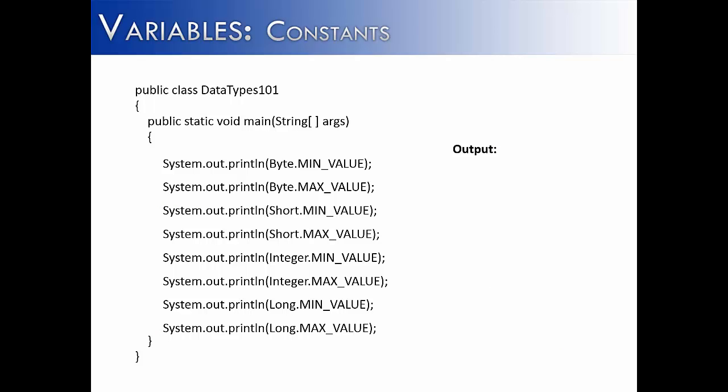Now we're going to show you an actual example of coding with a constant. And to do that, we're going to use constants from the byte class, the short class, the integer class, and the long class. And the constants have the exact same name, MIN_VALUE and MAX_VALUE.